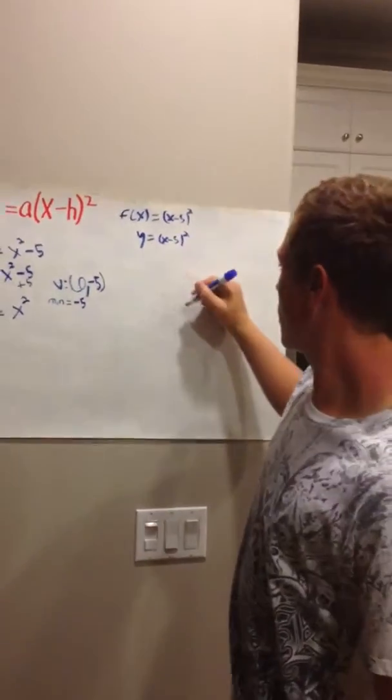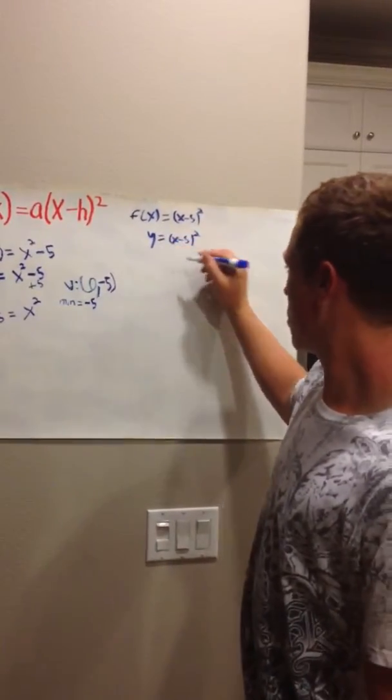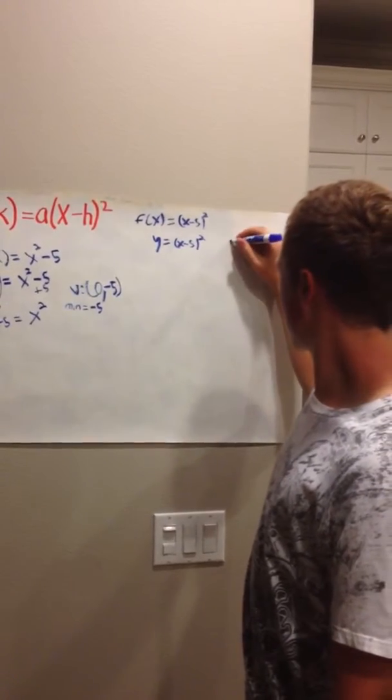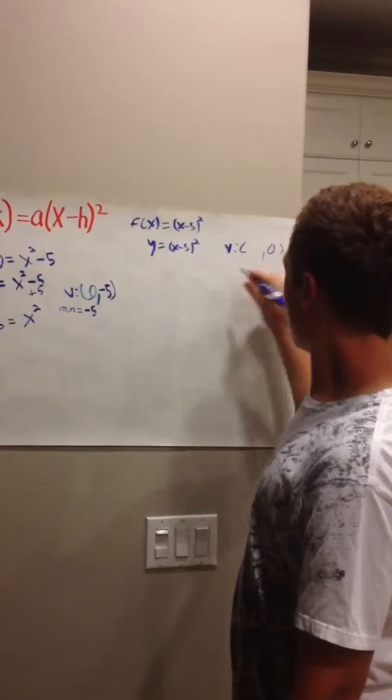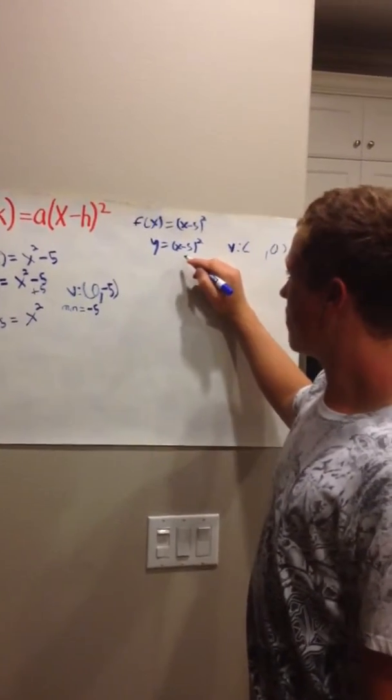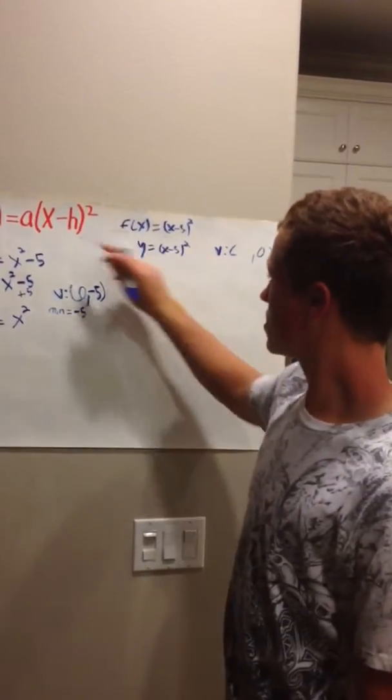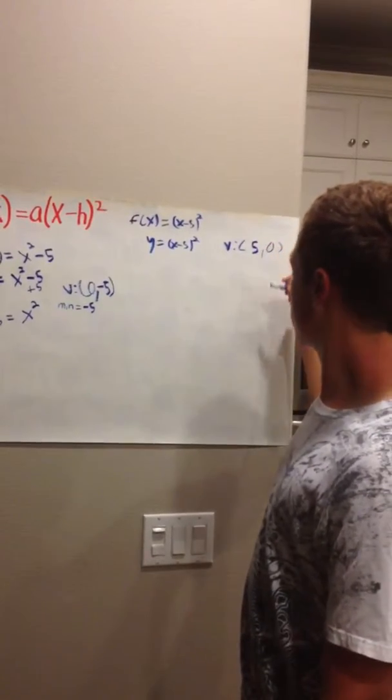So your y is going to equal 0 on your vertex. And since you have a negative 5, it's going to be equal positive 5 since that is in your formula. And that will be your vertex.